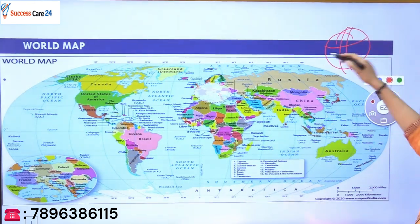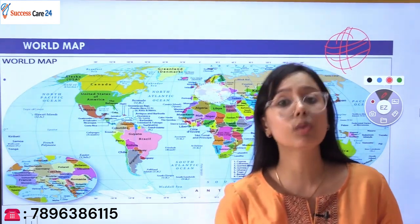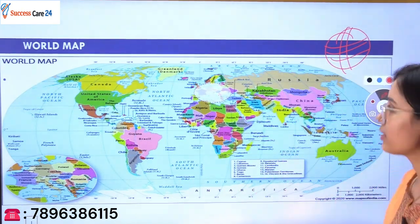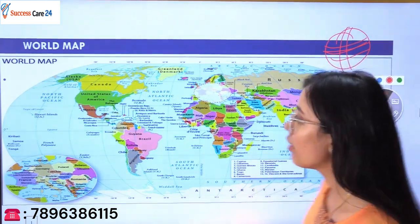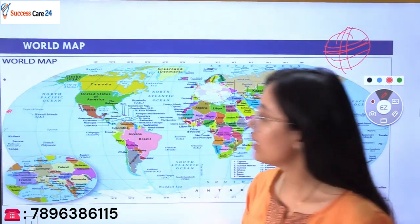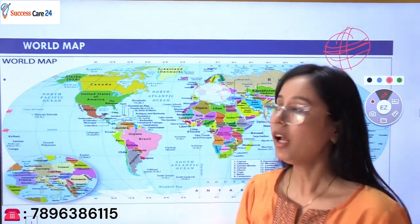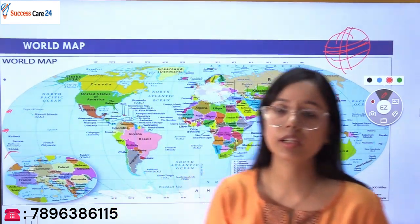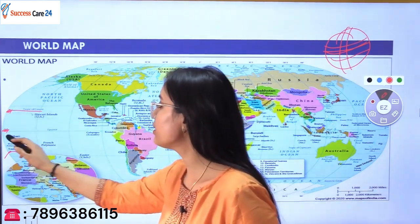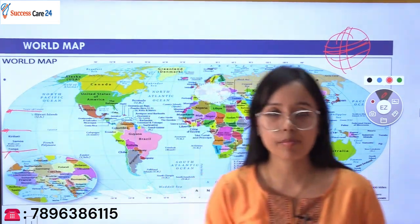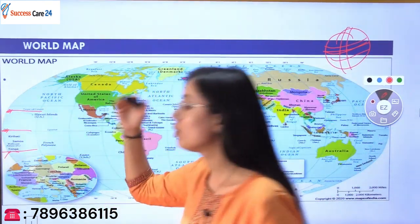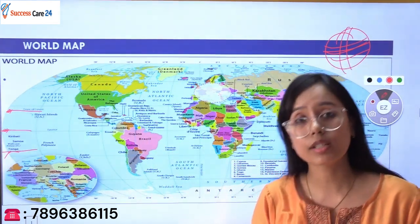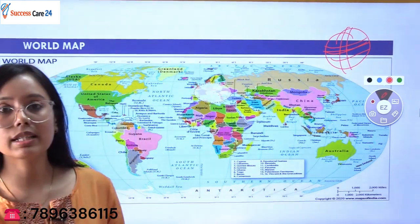We can locate countries and places using longitudes and latitudes. The Equator is at 0 degrees. At 23 and a half degrees north is our Tropic of Cancer. At 0 degrees is our Equator. And at 23 and a half degrees south is our Tropic of Capricorn. So this is your Tropic of Cancer, this is your Equator, and this is your Tropic of Capricorn. Let's start the mapping series.